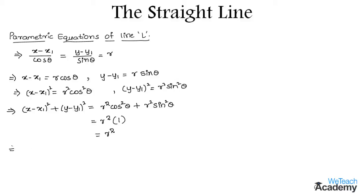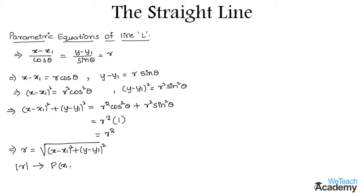That implies r = √[(x - x1)² + (y - y1)²], which is nothing but the distance formula. Here |r| denotes the distance of a point P(x1, y1) from the point Q(x, y) on the same straight line L. The variable r is a real number and is called a parameter.